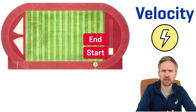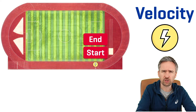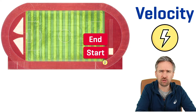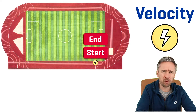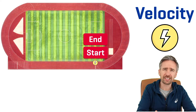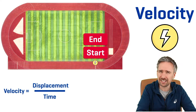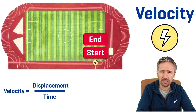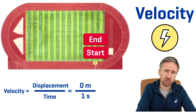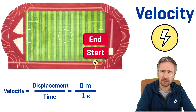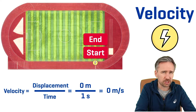Now what about velocity? How does that change when we think about the Flash's velocity on the track? Velocity is calculated from displacement divided by time. His displacement is the distance between his starting point and his end point — and in this case it's actually zero meters. So regardless of how long it took him to complete the lap, which was one second, his velocity will be a confusing zero meters per second.